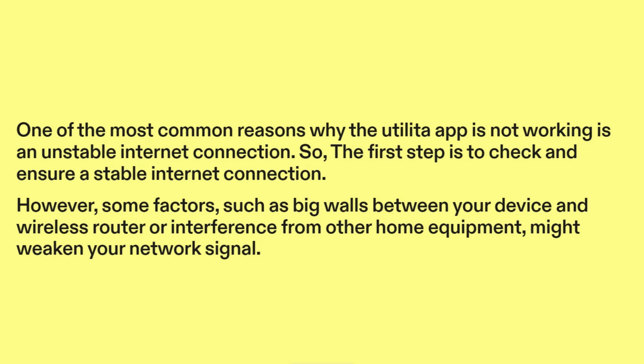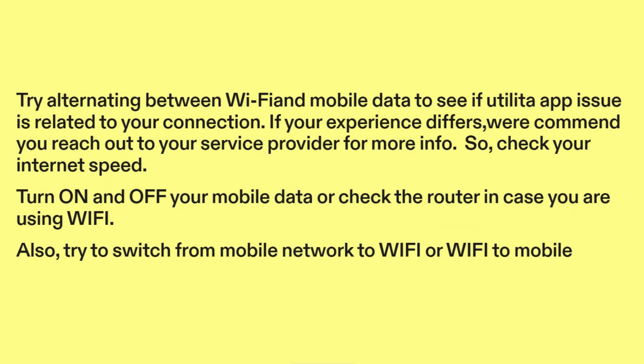However, some factors such as big walls between your device and wireless router, or interference from other home equipment, might weaken your network signal. Try alternating between Wi-Fi and mobile data to see if the Utilita app issue is related to your connection. If your experience differs, reach out to your service provider. Check your internet speed, turn on and off your mobile data or check the router, and try switching from mobile network to Wi-Fi or Wi-Fi to mobile.